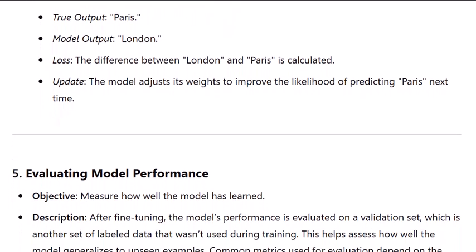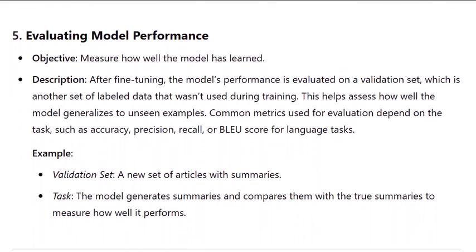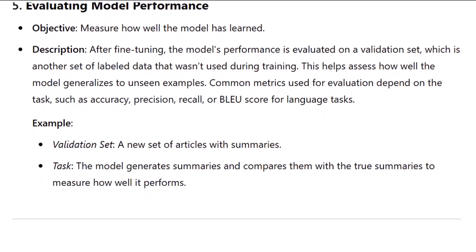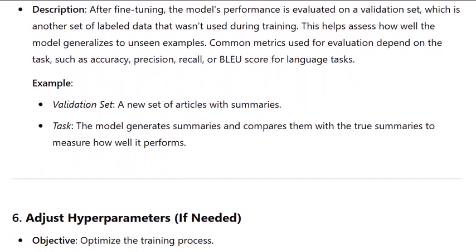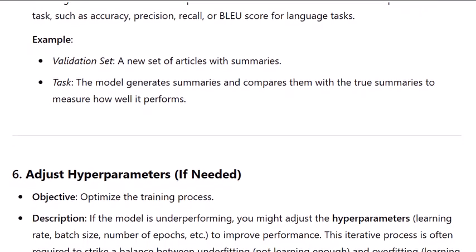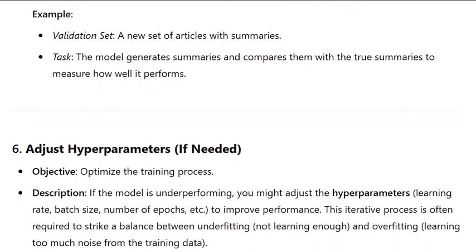Step five: evaluating model performance. Objective: measure how well the model has learned. After fine-tuning, the model's performance is evaluated on a validation set, which is another set of labeled data that wasn't used during training. This helps assess how well the model generalizes to unseen examples. Common metrics depend on the task, such as accuracy, precision, recall, or BLEU score for language tasks. Example: a new set of articles with summaries is used, and the model generates summaries and compares them with the true summaries to measure performance.